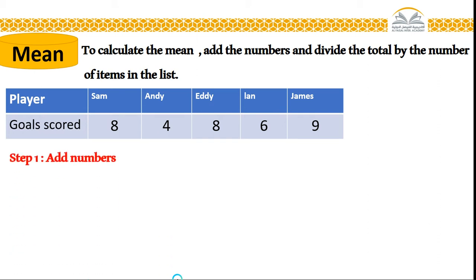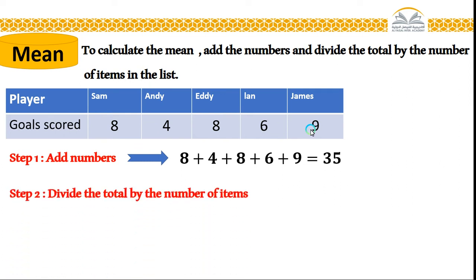First step, I will add all the numbers of goals. So I have here eight plus four plus eight plus six plus nine. After simple calculation, I will get 35. Now, my second step, I will divide the total of these items, 35, by the number of the items.